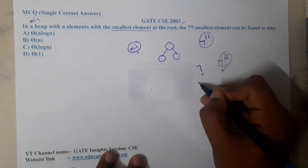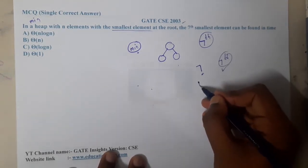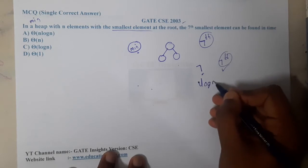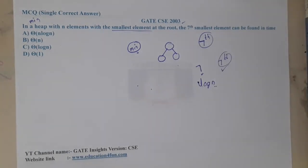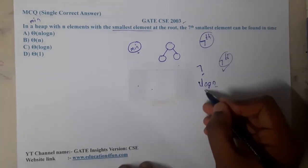Why is it log n? Because we need to delete the element and reform the heap. That is the reason why the cost will be log n. If you want to apply it seven times, it's seven into log n, right?